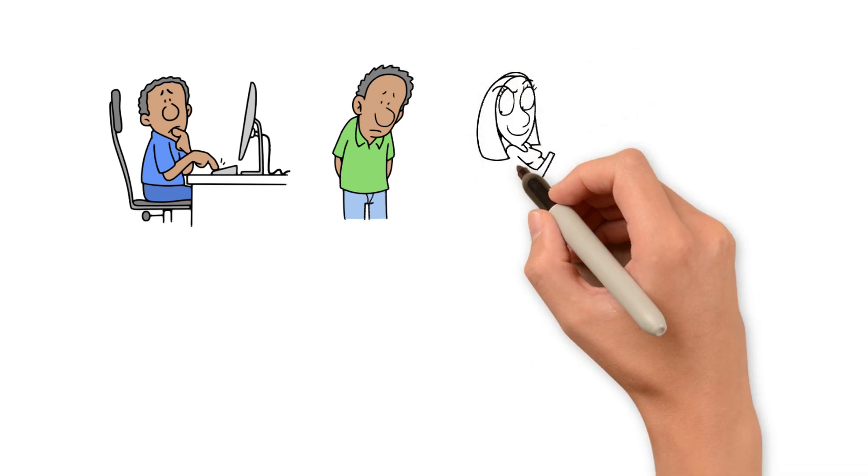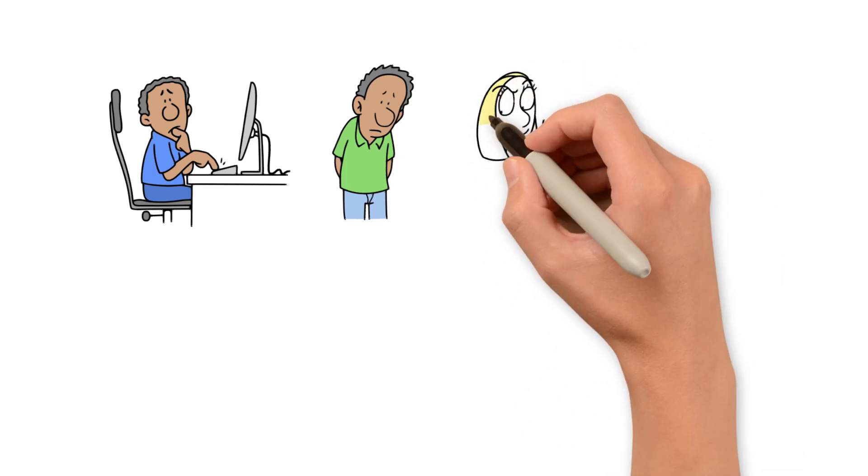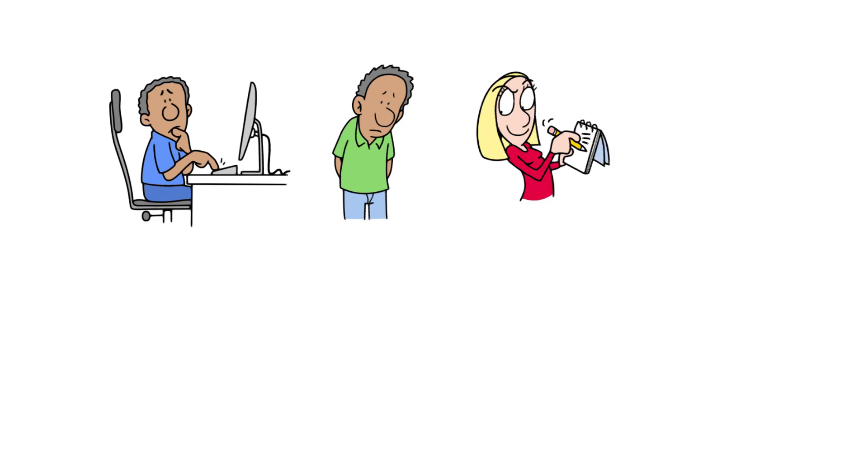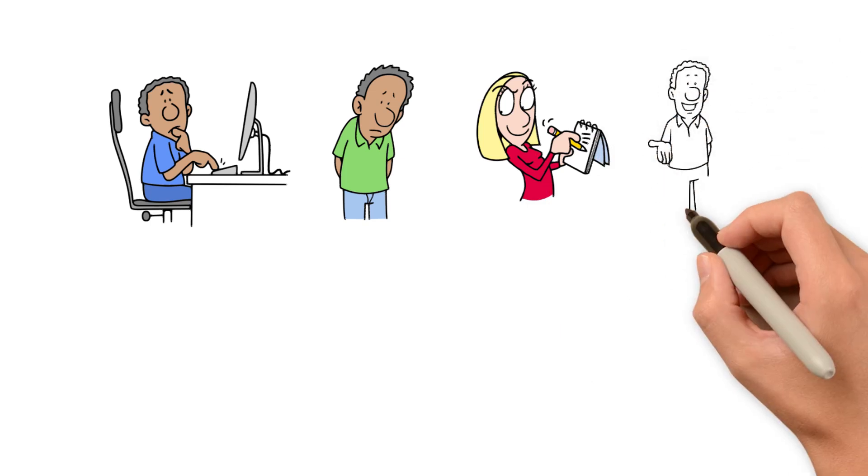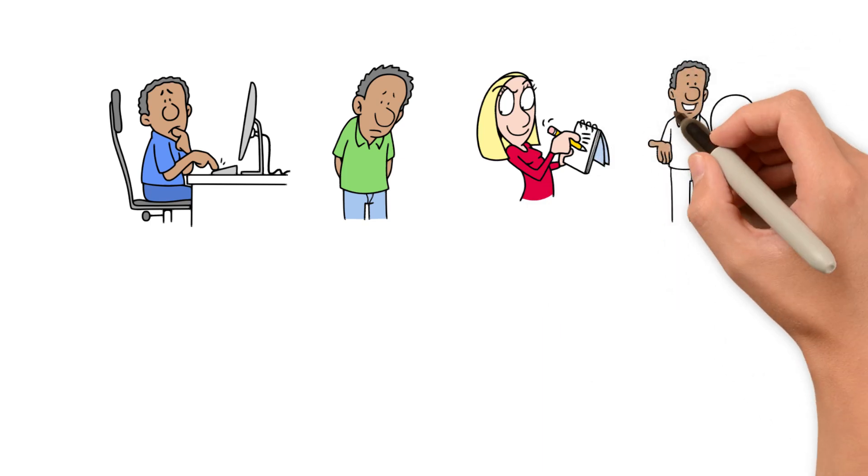Meanwhile, Aisha seemed to have it all figured out. She studied less, never crammed, and still scored top marks. It didn't seem fair. One night, after another frustrating study session, Zaid finally broke down. He called Aisha and asked, why is this so easy for you, but so hard for me?